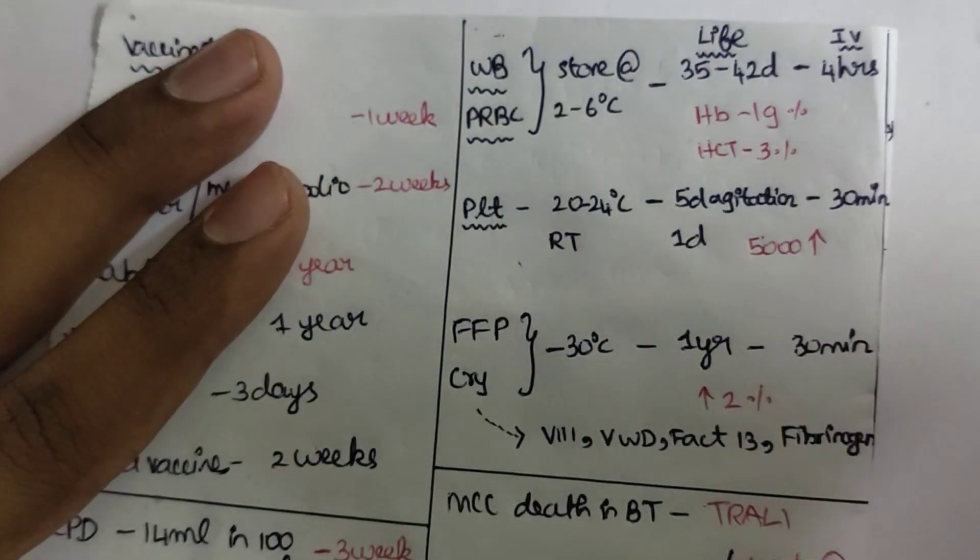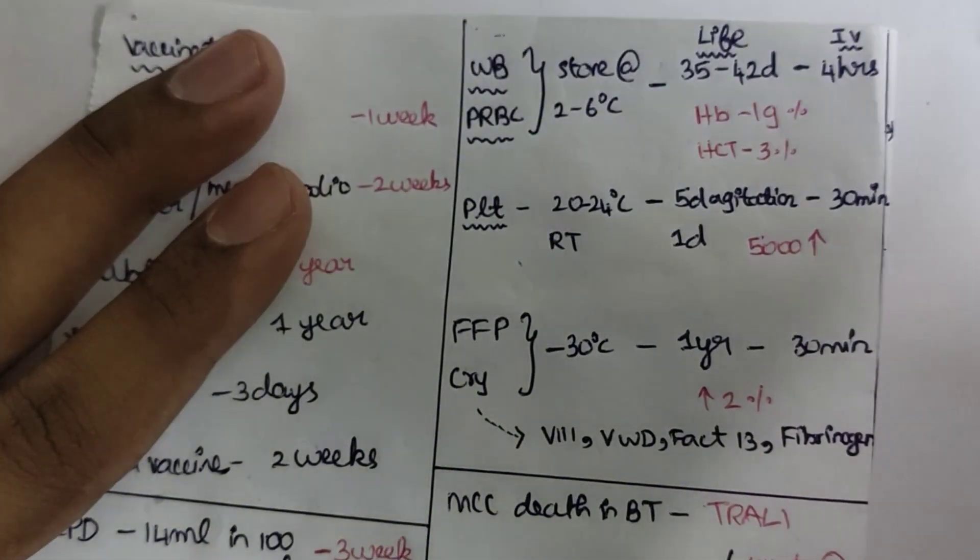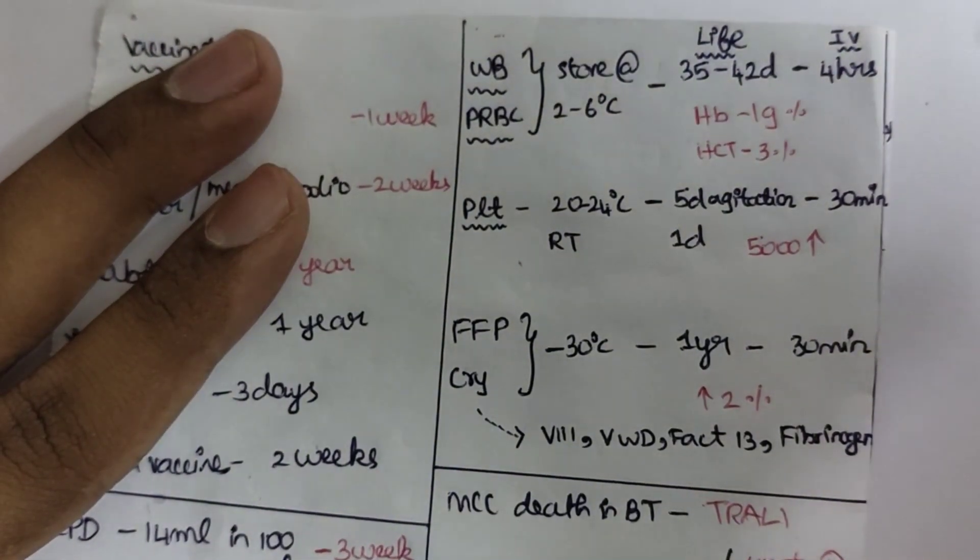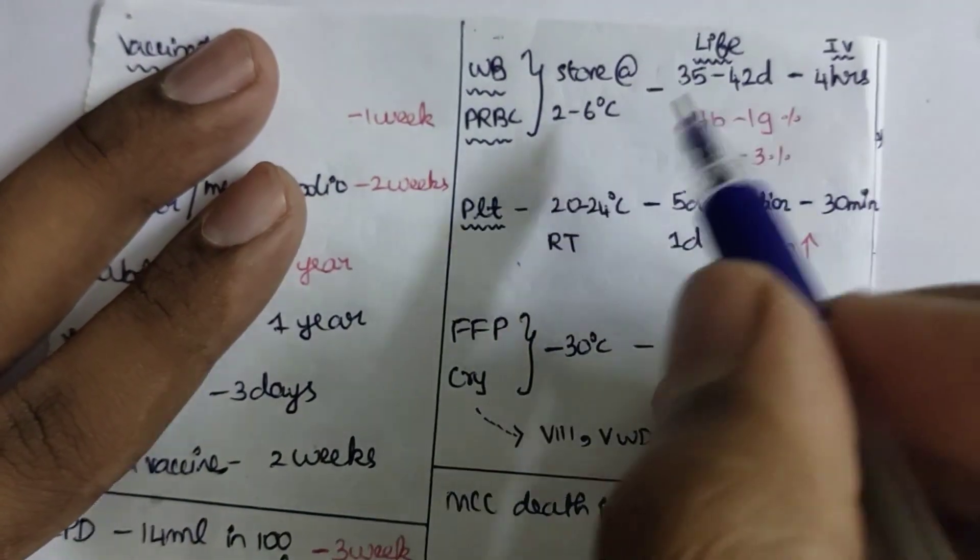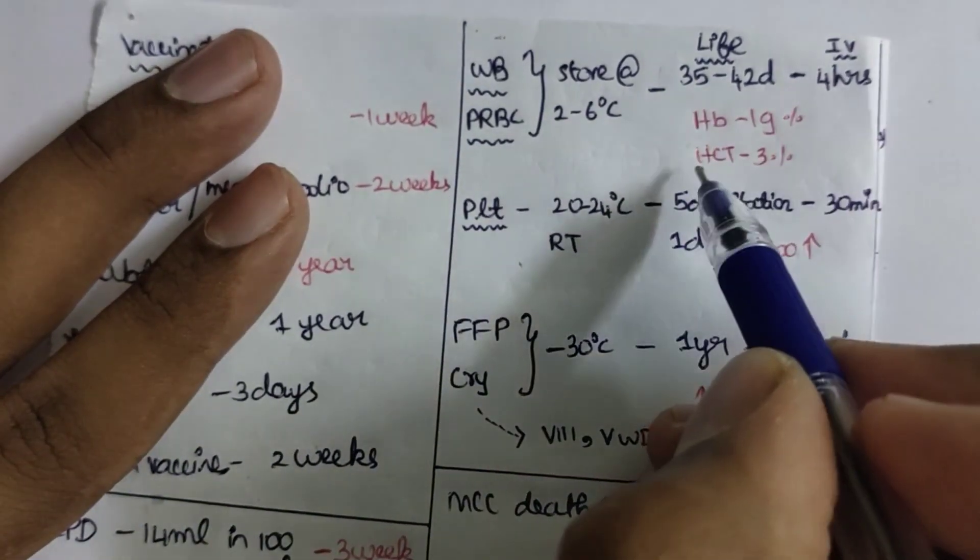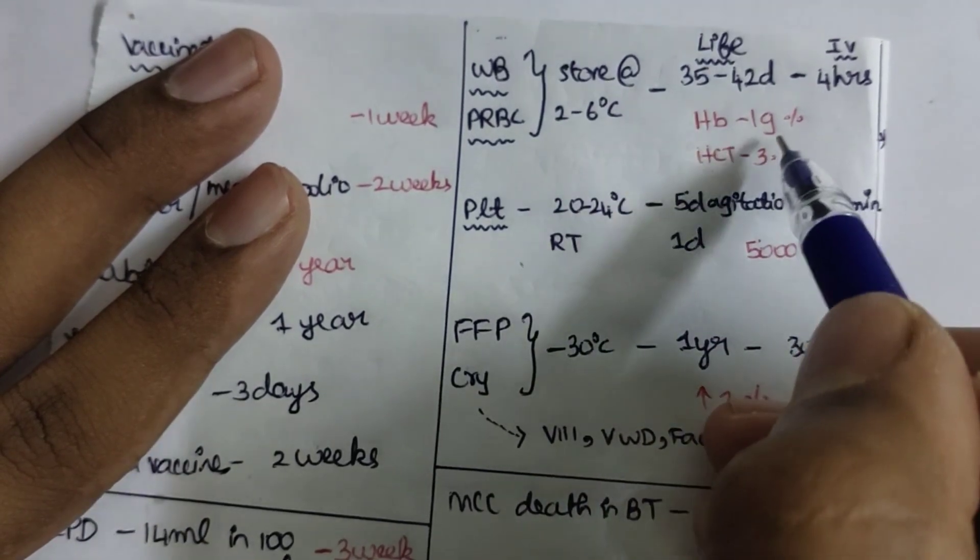If an intern or a resident gets blood from the blood bank, they should finish the pack of whole blood or PRBC within four hours. This is a very important question. Each blood bag contributes an increase in hematocrit of 3% and hemoglobin of 1 gram.